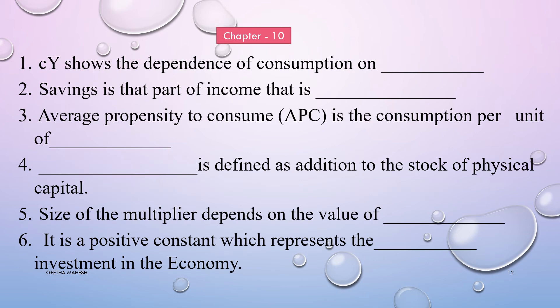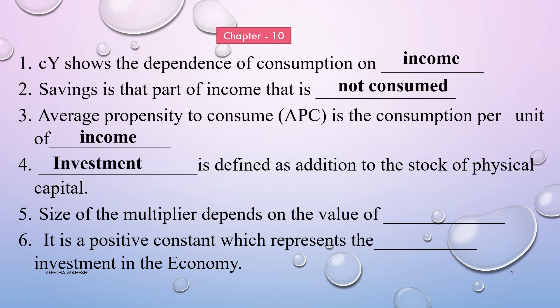Let us discuss a few important fill in the blanks from chapter 10. C-Y shows the dependence of consumption on income. Savings is that part of income that is not consumed. Average propensity to consume is the consumption per unit of income. Investment is defined as addition to the stock of physical capital. The size of the multiplier depends on the value of MPC. A positive constant which represents the autonomous investment in the economy.